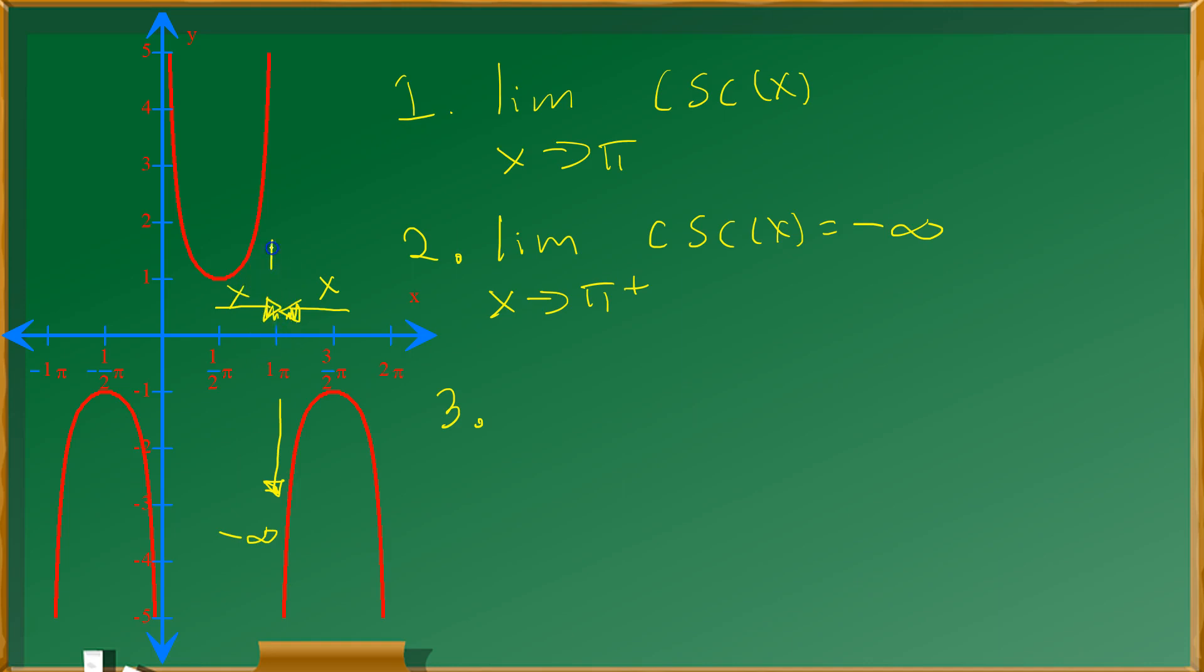When that occurs, the values of the function move up along that curve towards positive infinity. You see that? So we can say that the limit as x approaches pi from the left of cosecant of x is positive infinity.